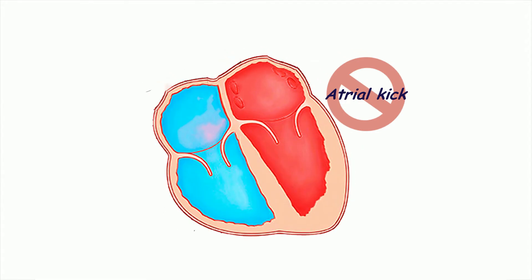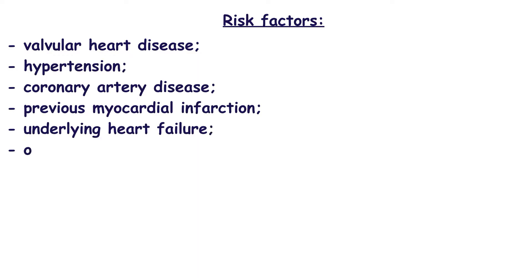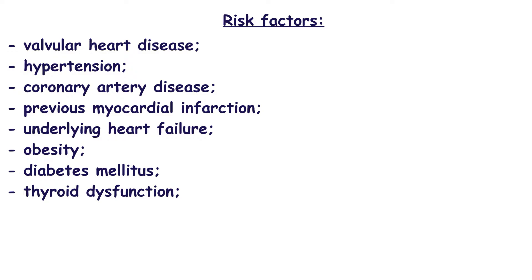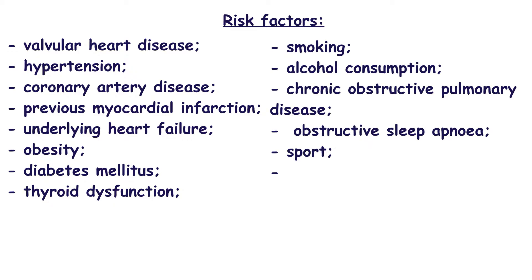Risk factors of atrial fibrillation involve valvular heart disease, hypertension, coronary artery disease, previous myocardial infarction, underlying heart failure, obesity, diabetes mellitus, thyroid dysfunction, smoking, alcohol consumption, chronic obstructive pulmonary disease, obstructive sleep apnea, sport, genetic factors, and others. But age is the main risk factor. People aged over 80 have atrial fibrillation 9 times more often than people under 60. It's important that atrial fibrillation can be triggered not only by hyperthyroidism but also by hypothyroidism.